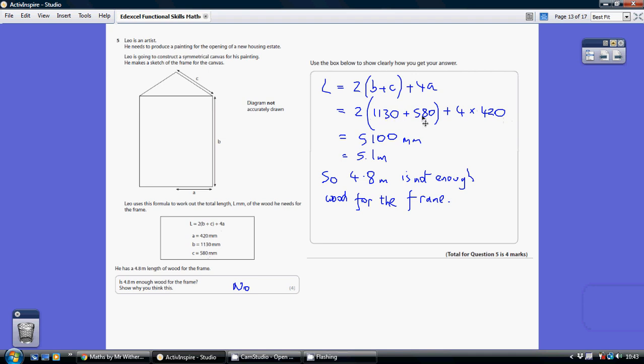to do this times this—sorry, this add this and multiply that by two, and that total we have to add on to four lots of 420, giving us 5100 millimeters. Now we then need to convert that into meters